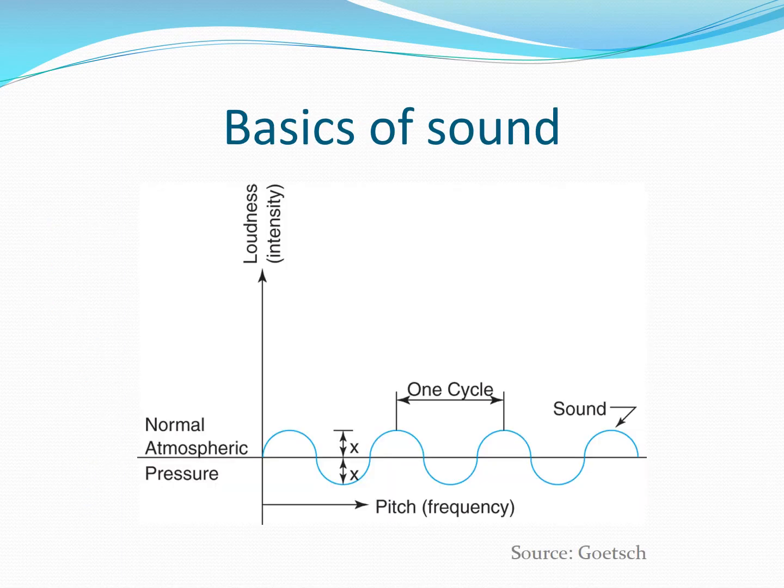Let's begin with the basics of sound. Sound is produced by changes in normal atmospheric pressure that are detectable by our ears. This graph shows the basic elements of sound, which are loudness and pitch, also referred to as intensity and frequency of sound.